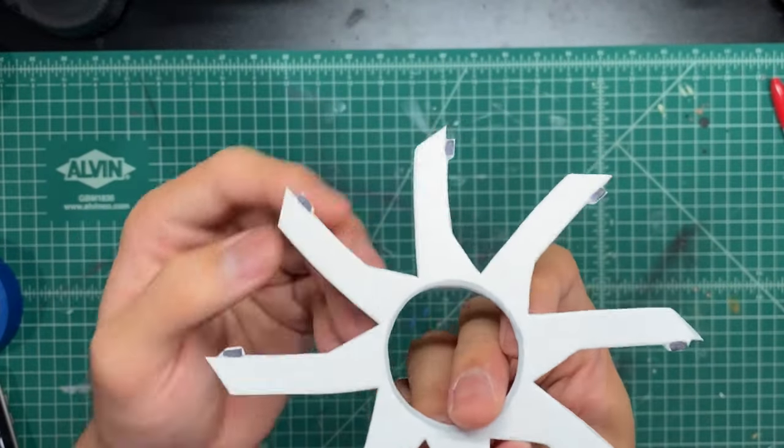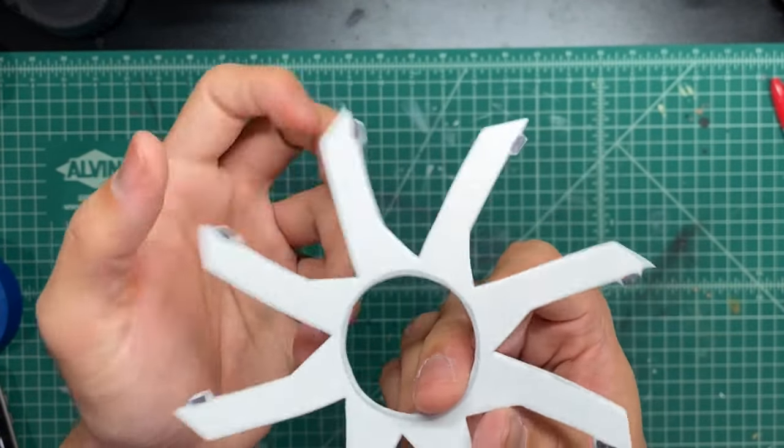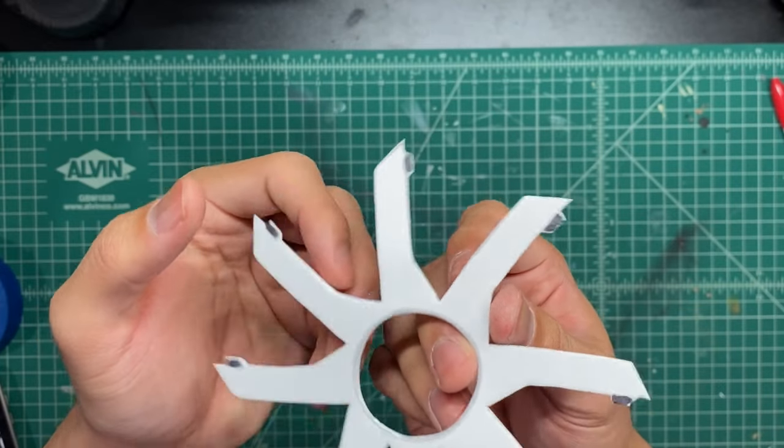So you should have a piece that looks like this. Before we glue it on, we are going to end up painting this thing.